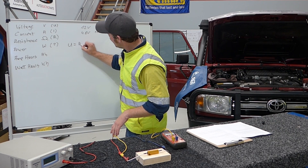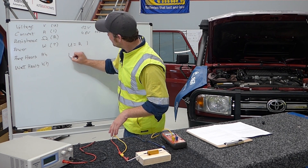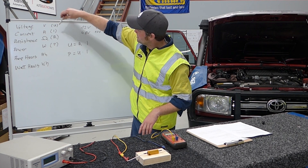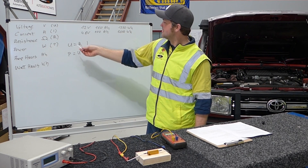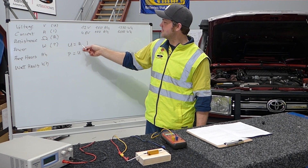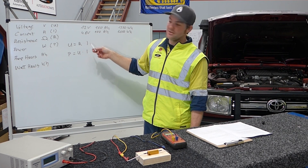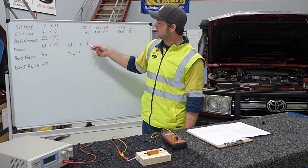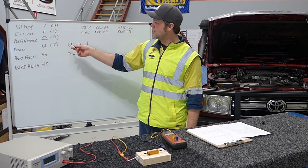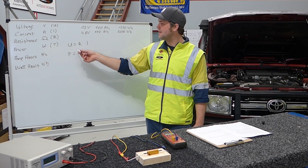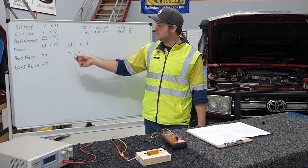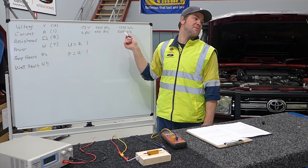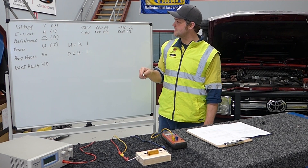We have U equals R times I, and we have P equals U times I. Please refer to the symbols so you know what they are. So this is voltage equals resistance times current — as soon as we have any two of those values we can calculate the third. But the one we will be using mostly in our installations is P equals U times I, the power equals voltage times current, just as we did before to get the watt hours from the battery.